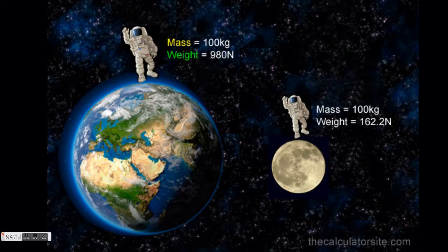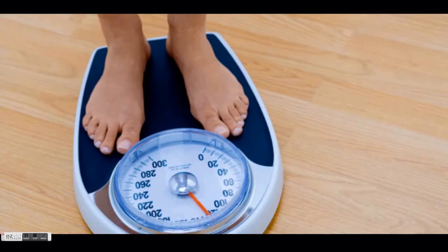The weight of the astronaut is 980 newtons on Earth, and only 162.2 newtons on the Moon. There is less gravity on the Moon, so the weight of the astronaut has gone down.